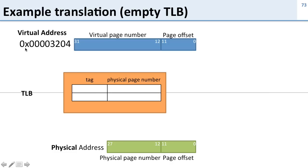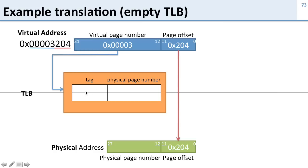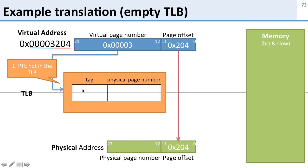Let's go ahead and get started. Here's a virtual address that comes in. We look at the page offset — the page offset is just going to go right through — and we have a virtual page number. The virtual page number is going to be translated. So the page offset gets passed through, and the virtual page number goes into the TLB. But there's nothing in our TLB yet, so we miss in the TLB.